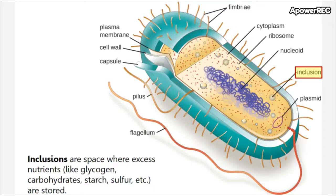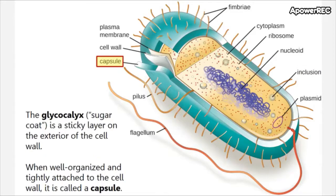Inclusions are spaces where excess nutrients like glycogen, carbohydrates, starch, sulfur, and phosphates are stored for later use. The glycocalyx, which literally means 'sugar coat,' is a sticky substance that is secreted by bacteria and coats the outer cell. When it is well organized and tightly attached to the cell wall, it is called a capsule.